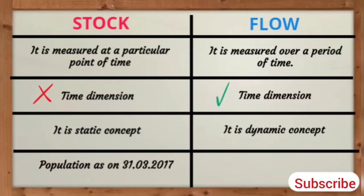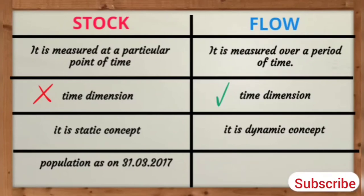Example for Stock: Population as on 31st of March 2017. Example for Flow: Number of births during 2017.